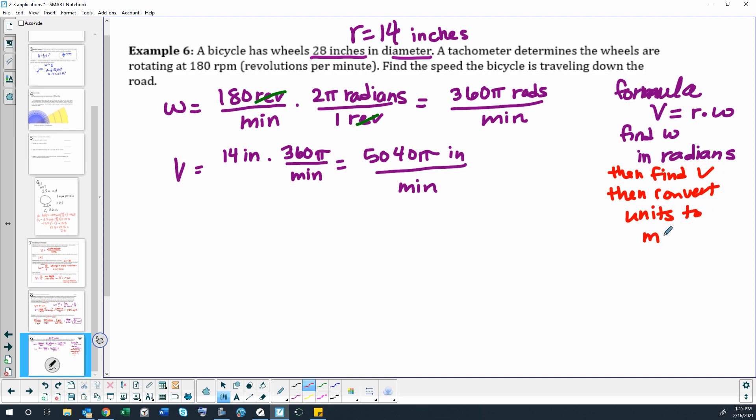To miles per hour. All right, so we're going to take our 5040π inches per minute and we'll multiply by one foot in 12 inches so that those will cancel.